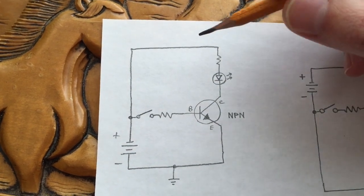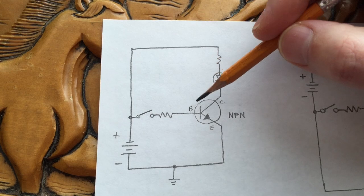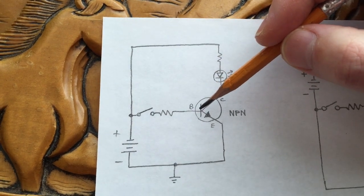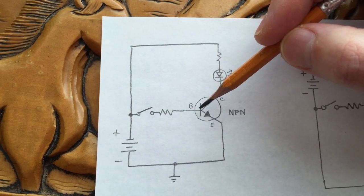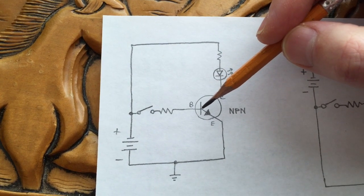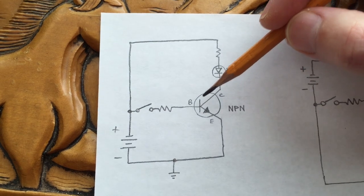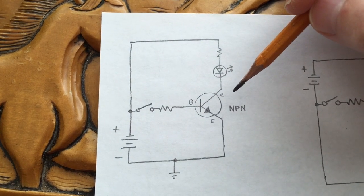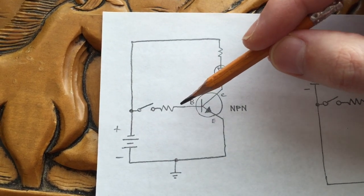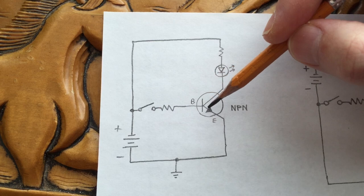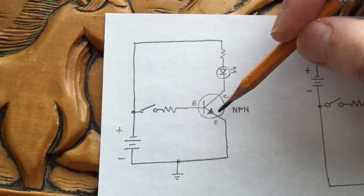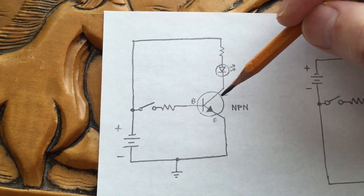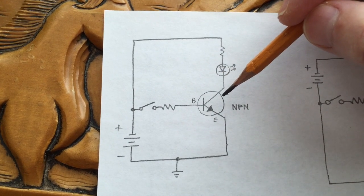The base is a special terminal. Current flowing into the base of an NPN transistor turns the transistor on, and the transistor is a current multiplier. So however much current is flowing into the base, that current will be multiplied in the output of the transistor.